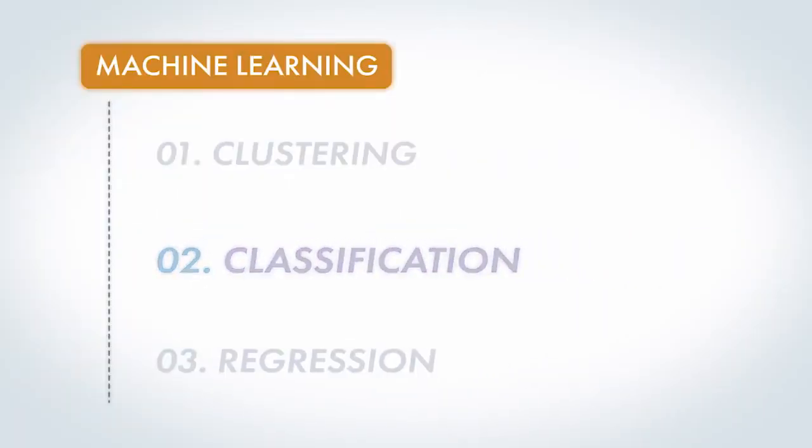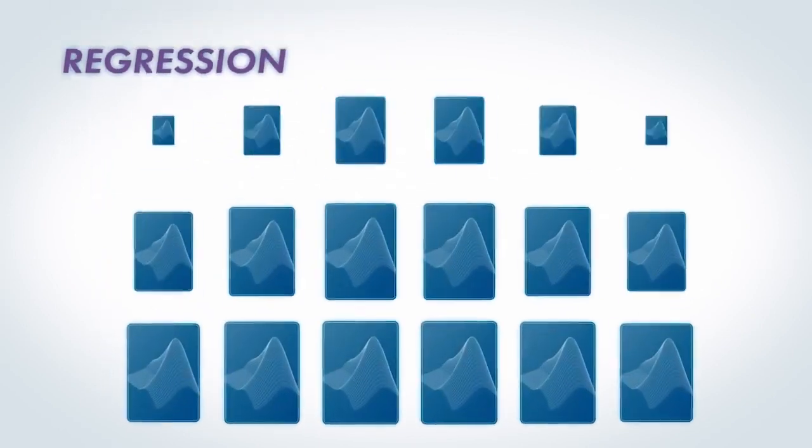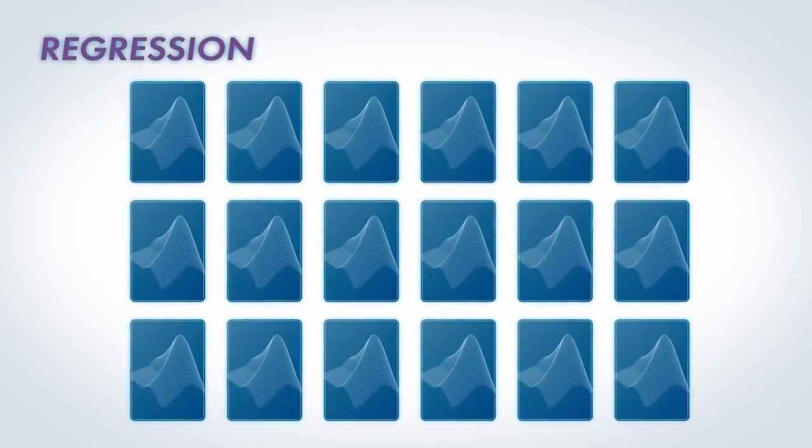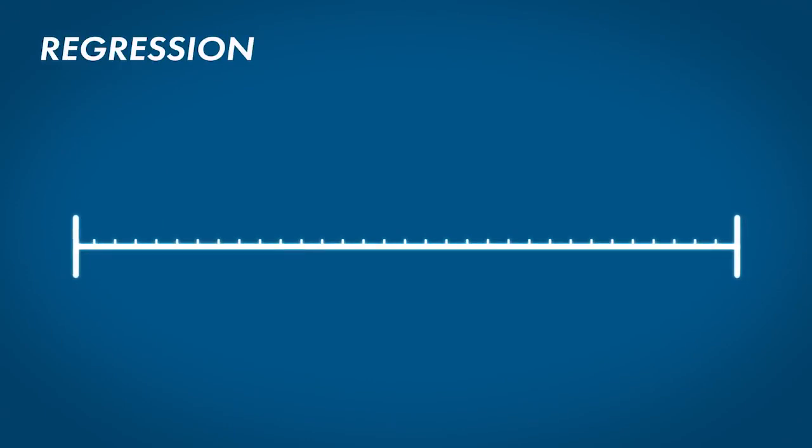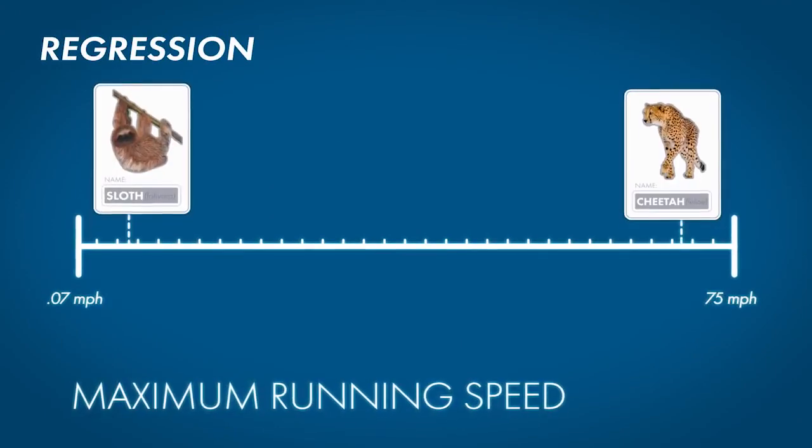The third type of machine learning is regression, where instead of classifying into a finite number of outputs, we're trying to find an answer on a continuum, like the maximum running speed of an animal.